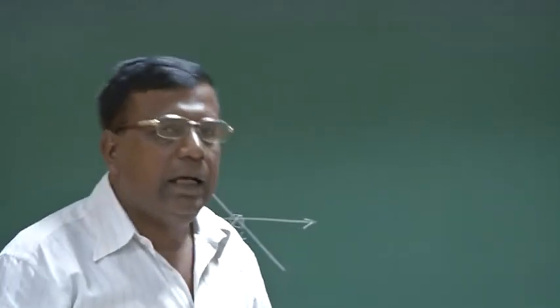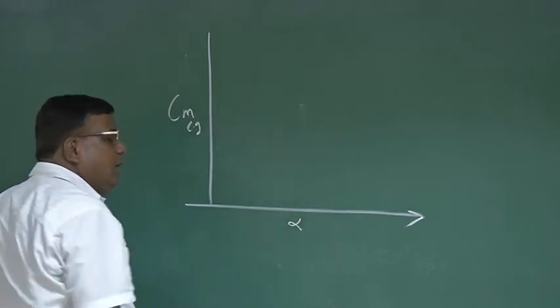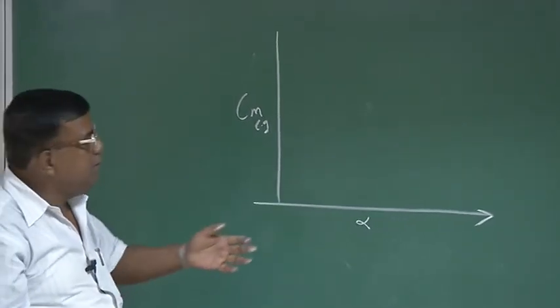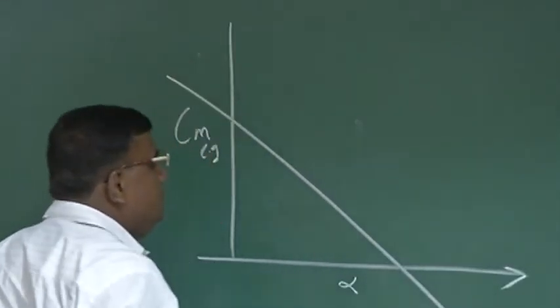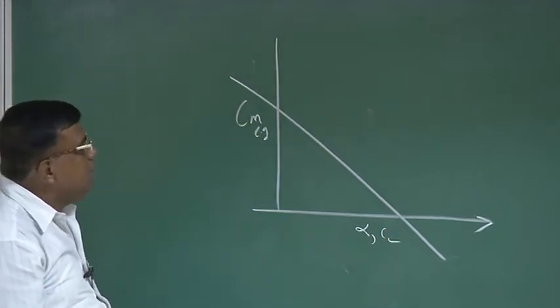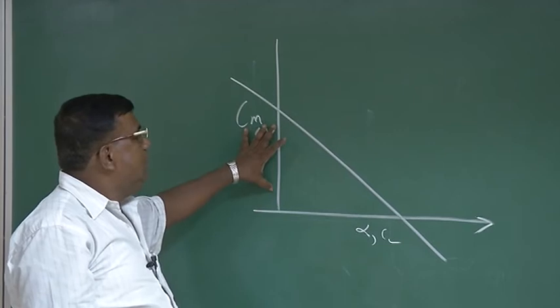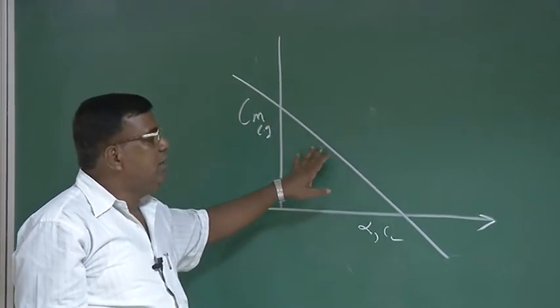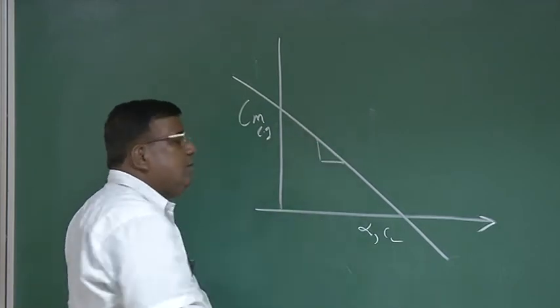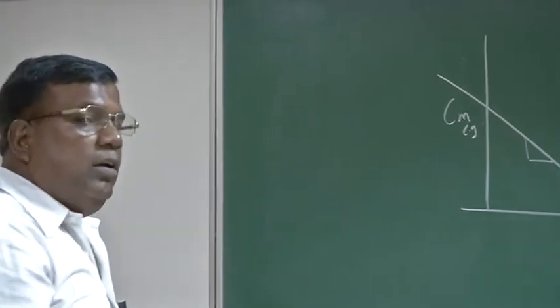We are in continuation with the stability and control aspects. We will now be discussing about aircraft. By now, you understand CM_CG versus alpha or versus CL — they are not really different, it's just a question of changing the scale. The basic question is: if I want the airplane to generate CM0 by itself, and also generate the slope in the requisite manner, let us first find out who are the contributors, then we will talk about numbers.